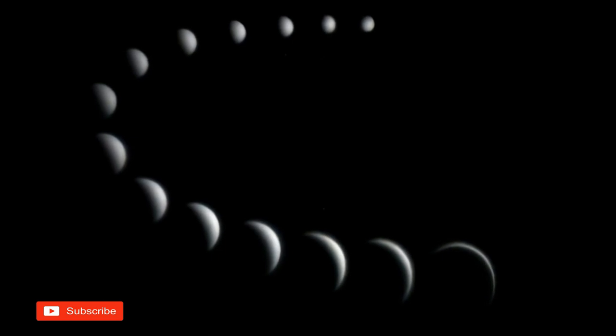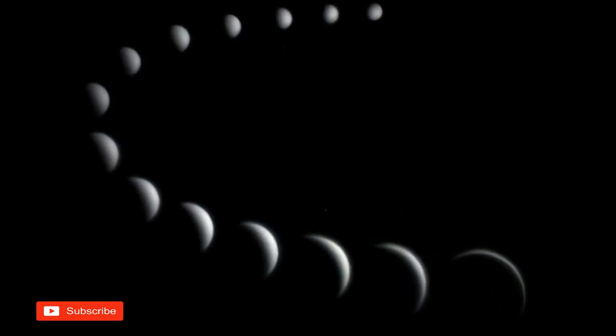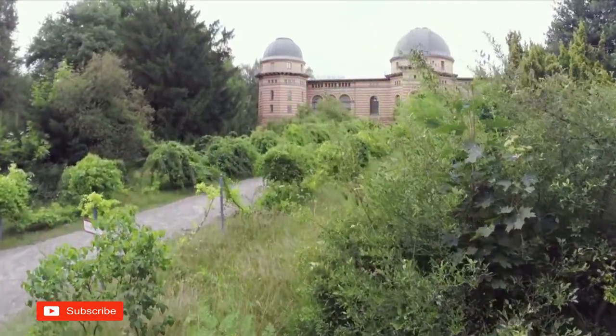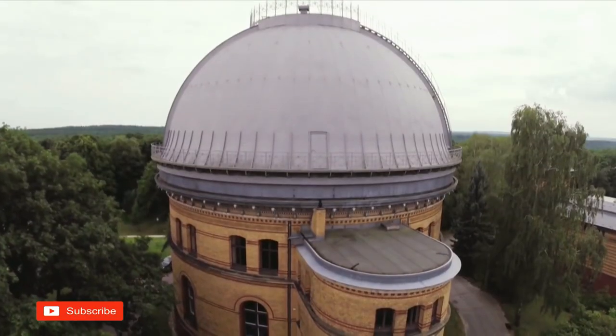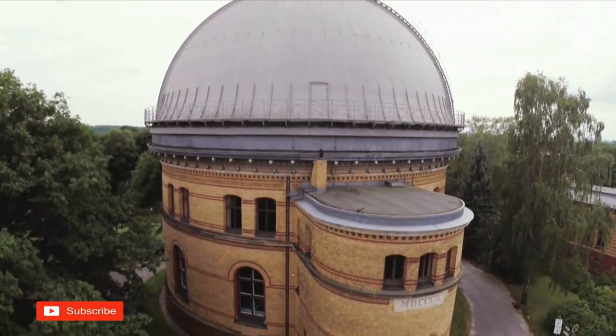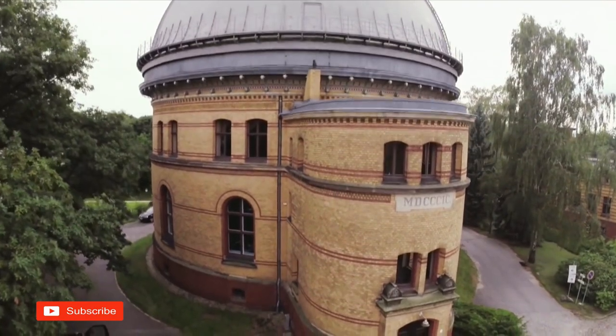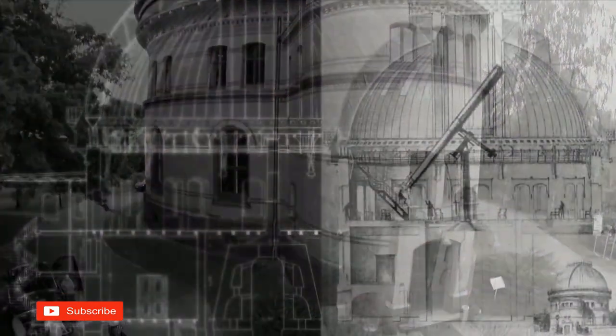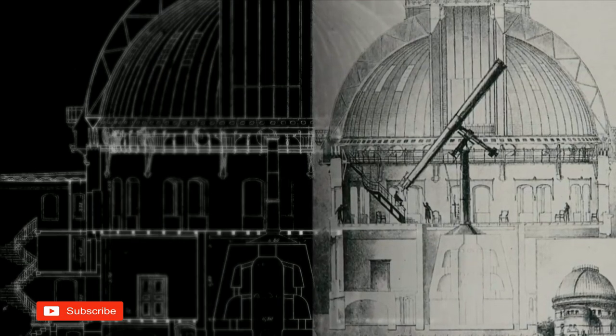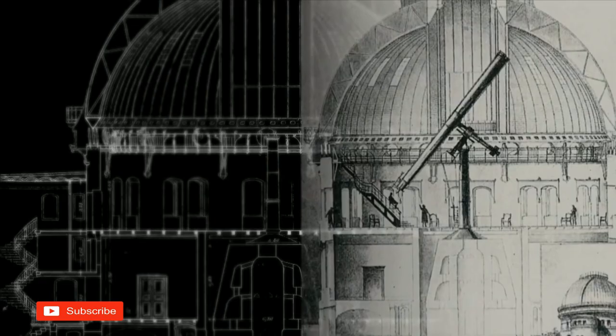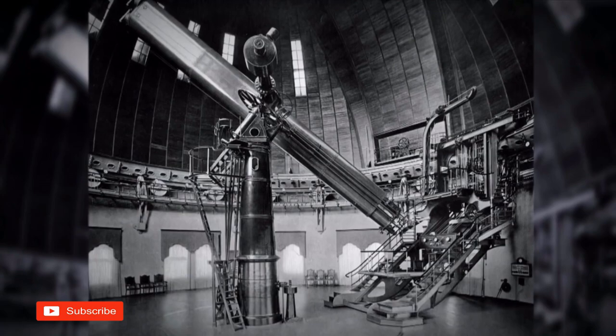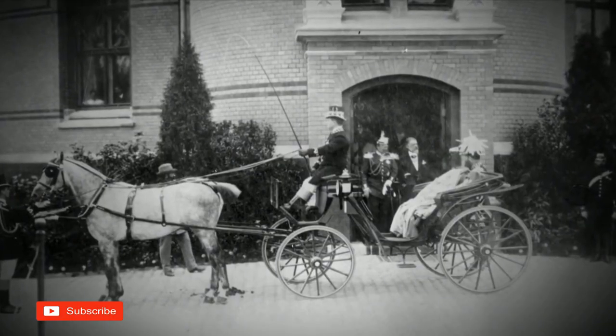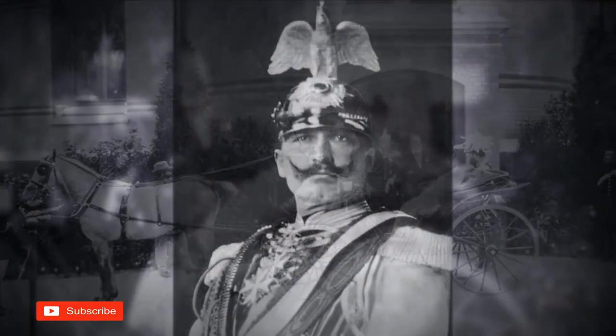All over the world, people began to build increasingly larger and better telescopes. The end of the 19th century was the heyday of the large-scale refractors. Gigantic refracting telescopes housed in veritable cathedrals of astronomy. In 1899, the great refractor was completed on Telegraph Hill in Potsdam.